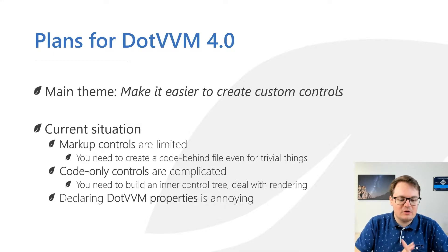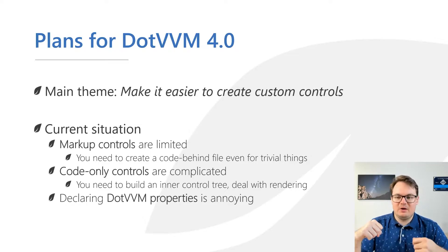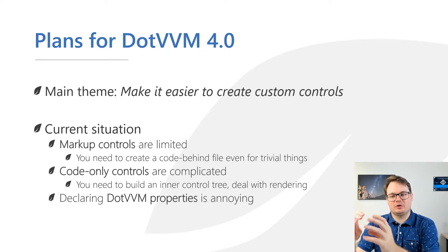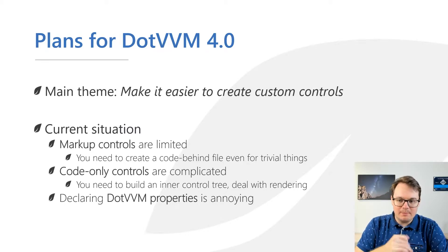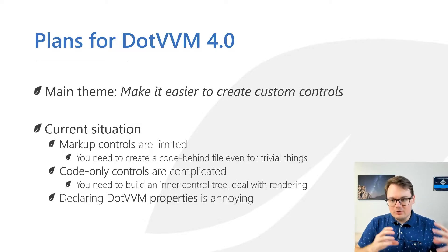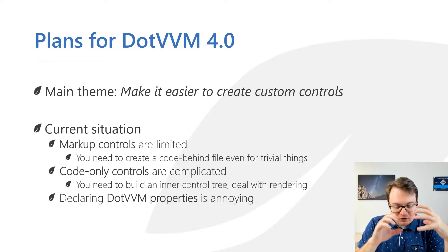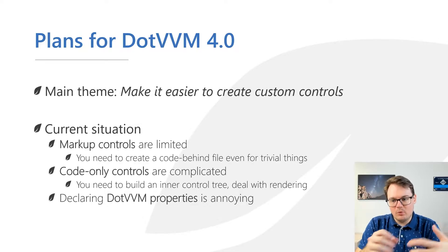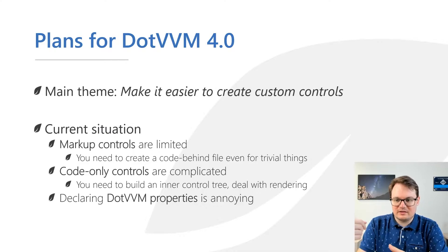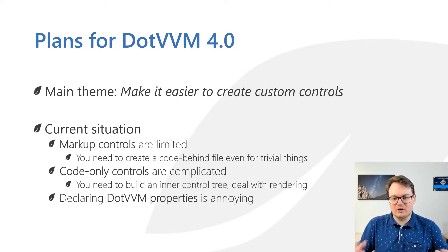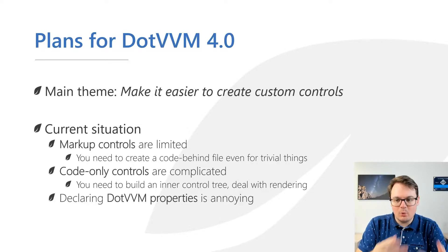Currently in the framework we have two types of controls. First are markup controls — files with a .control extension. It's a piece of HTML markup where you can define your own properties and reuse it anywhere in your application. This is great for application-specific markup controls, but it's hard to imagine a universal markup control that works in any app, because typically these controls use CSS styles tied to a specific application.